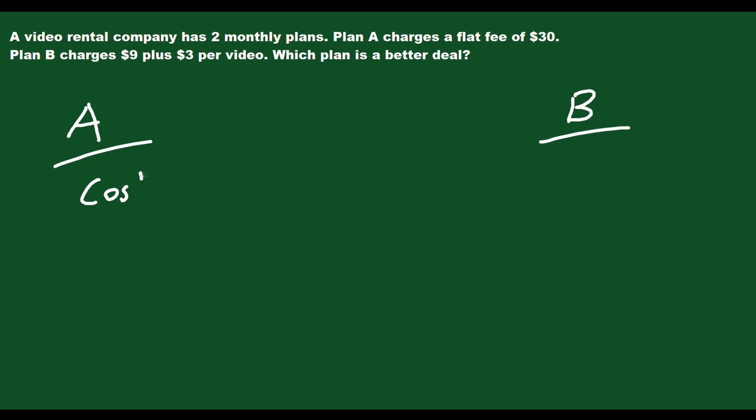So plan A, the cost is $30, and it's $30 no matter what. So if you're trying to write this as a linear equation, you might think, okay, well, you know, y equals mx plus b, but instead of y and x, what do we have? Well, we have cost, so maybe you say c instead of y, and then instead of x, maybe you put like v for the number of videos, and then plus b.